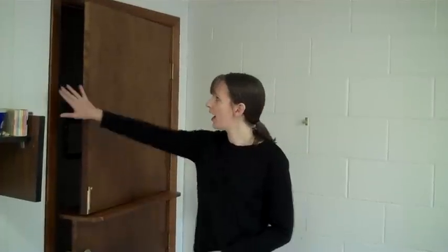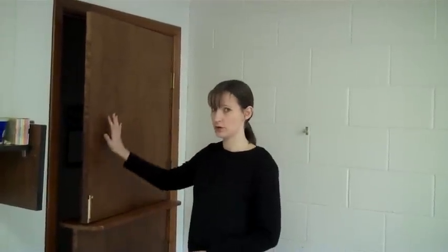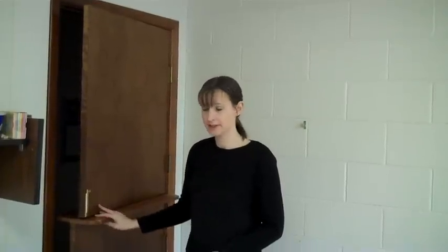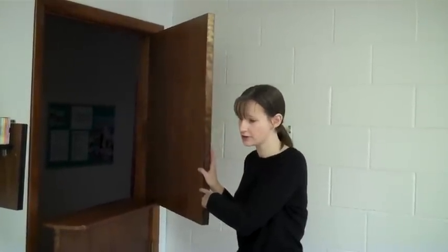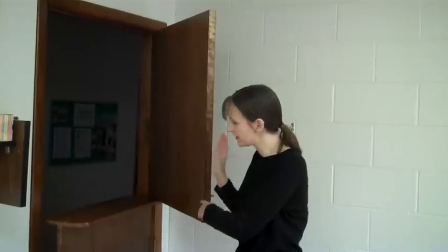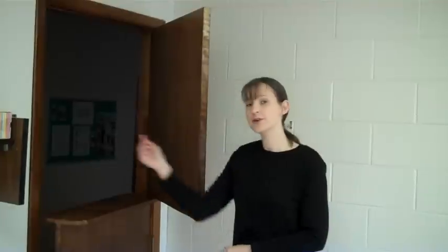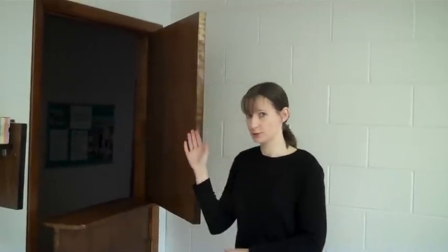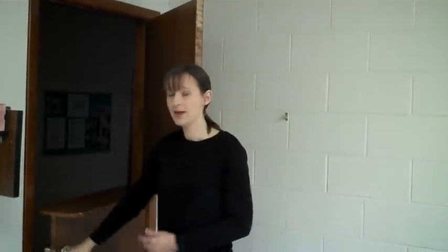The hinge theorem tells us that if two sides of one triangle are congruent to two sides of another triangle — here the doorway and the door are both congruent on both the top and the bottom pieces — and if the included angle of the first triangle, here the top door, is larger than the included angle of the second, here the bottom door, then the third side of the first, the opening of the top door, is going to be longer than the third side of the second. The converse of this is also going to be true: the longer the third side, the larger the included angle.